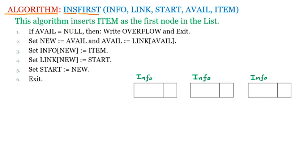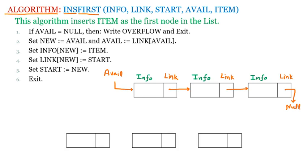The second part of each node is the link part, which points to the address of the next node. The last node points to null. This is the available list containing free nodes, and the pointer to its start is called 'available'. We will not work on the available list directly — we will work on our own linked list.